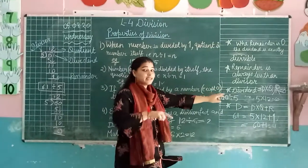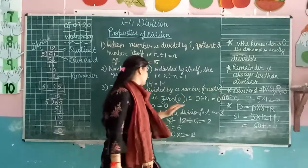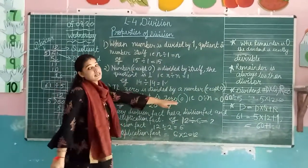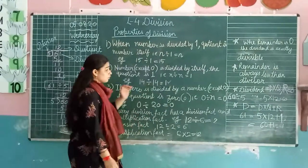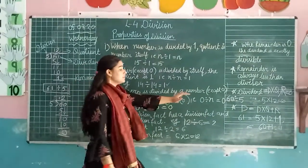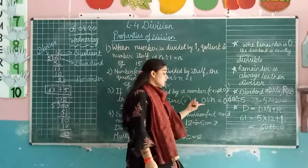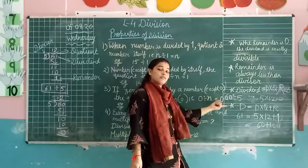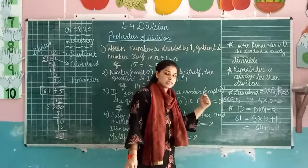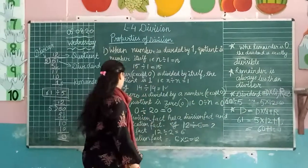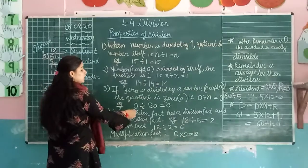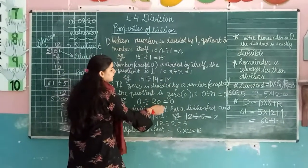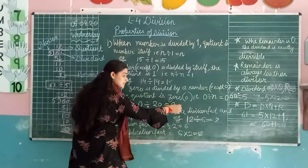When the dividend is 0, the quotient is also 0. If 0 is divided by any number, it will always be 0. For example, 0 divided by 20 is 0.